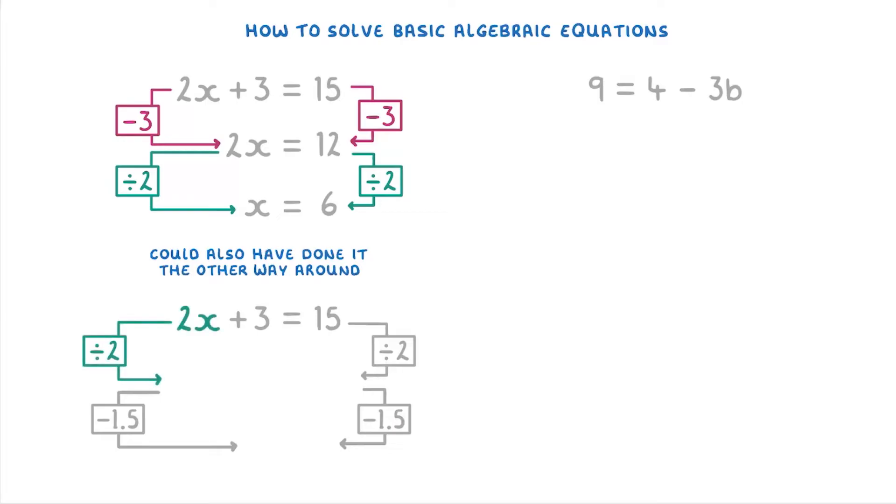So 2x divided by 2 which is x, 3 divided by 2 which is 1.5 and 15 divided by 2 which is 7.5. And so when it comes to the subtraction we only need to subtract 1.5 from both sides rather than 3. And just like before that will give us x on the left equals 6 on the right.